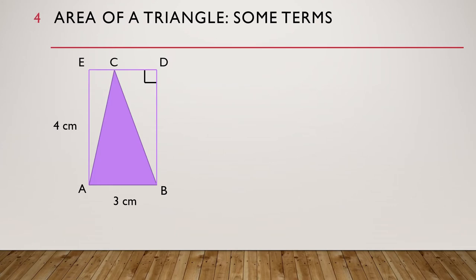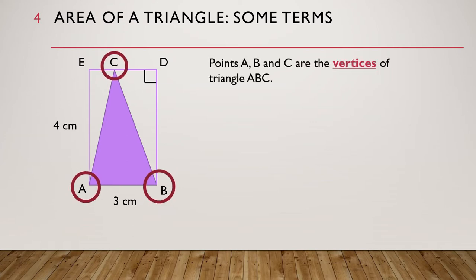Let's introduce some terms that we are going to use. The points A, B and C are called the vertices of triangle ABC. If we are talking about one of them, we say one vertex. If we are talking about many of them, we say many vertices.